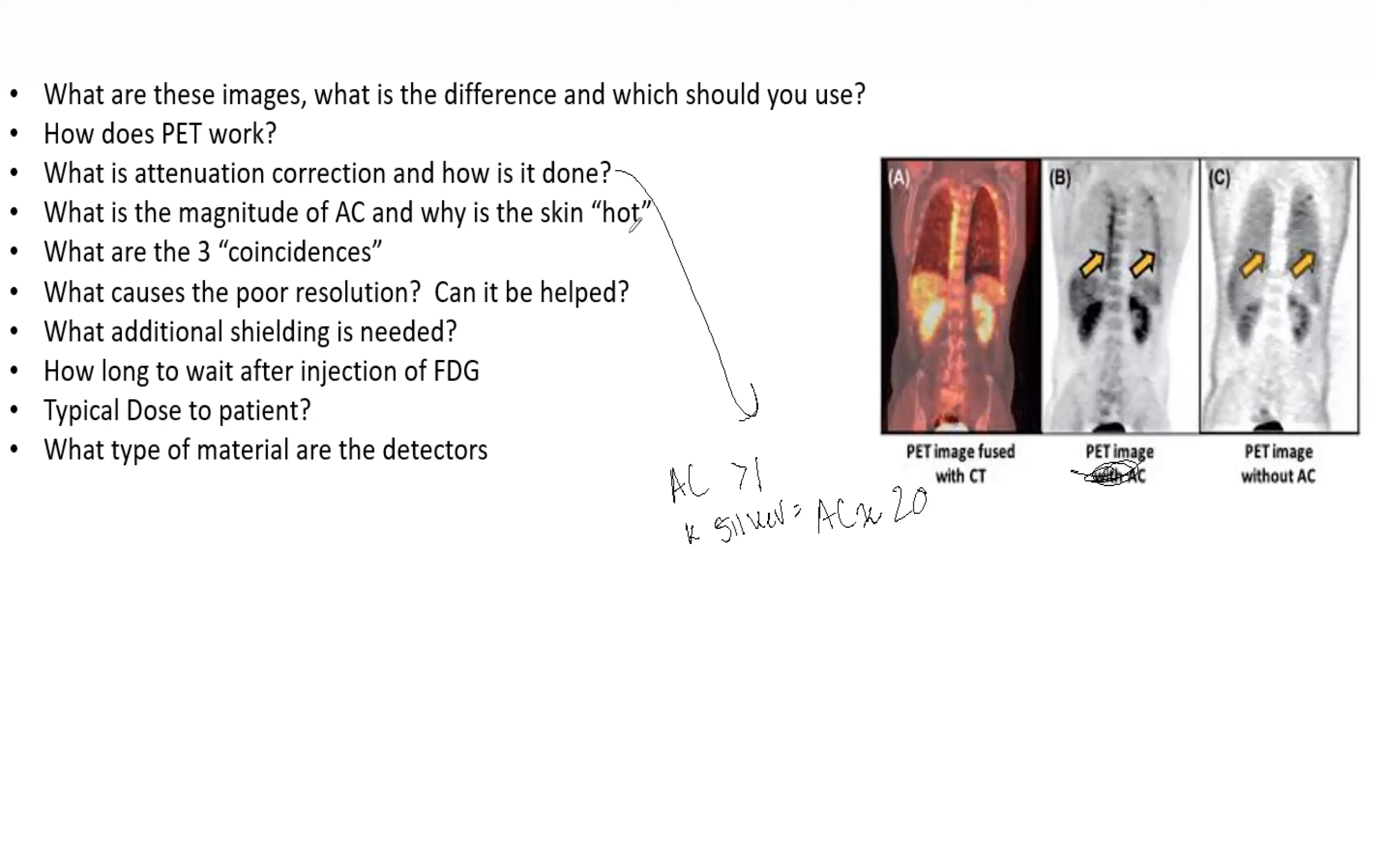So what are the three coincidences? You have a true signal, which are actual counts from annihilation sites. You have scatter, which are just scattered photons. You can use collimation to reduce this. And then you have random coincidences, which is just noise from the detectors.